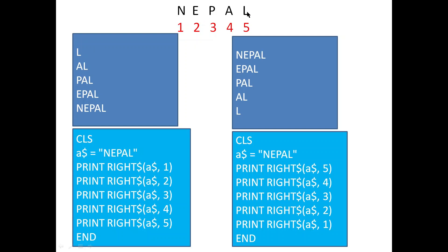You can see the string we are using is 'NEPAL'. The positions of the string are: N is at position one, E at second, P at third, A at fourth, and L at fifth — there are five characters. In the pattern, you can see L, L, L in every substring. The last character L is available on the right-hand side. Every time we see L, which is on the right-hand side, in this type of condition you have to use the Right$ function.